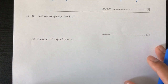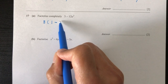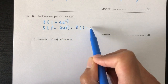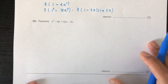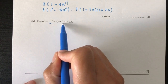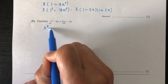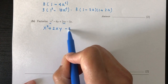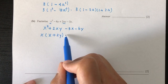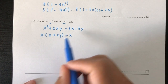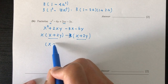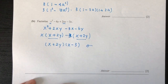Now question number 17, factorize completely. For part A, we take out 3: you have 3(1 minus 4a squared). Now observing we have 1 squared minus (2a) squared, which is a difference of two squares, giving 3(1 minus 2a)(1 plus 2a). For part B, factorize: we have x squared plus 2xy minus 3x minus 6y. Group them: (x squared plus 2xy) plus (-3x minus 6y). Taking x out of the first group gives x(x plus 2y), and taking minus 3 from the second group gives -3(x plus 2y). Since (x plus 2y) is common, we factorize to get (x plus 2y)(x minus 3).